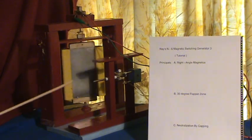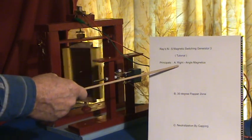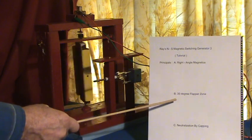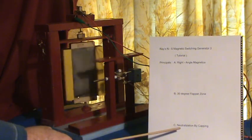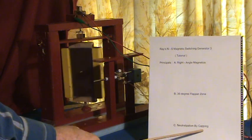We'll be going over these three principles: right angle magnetics, 30 degree flapper zone, and neutralization by capping.